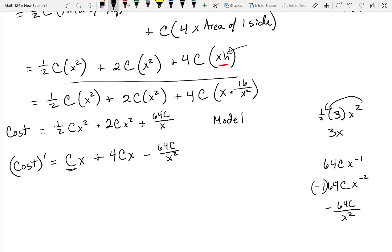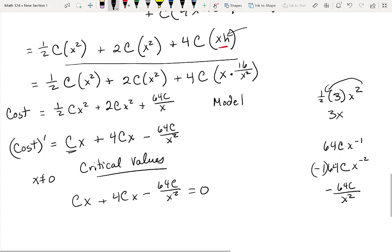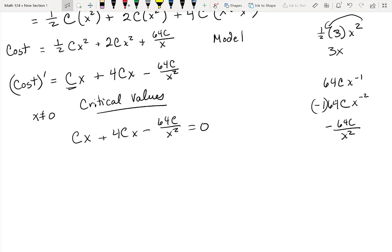So now we want to, one, cost is undefined at x equals 0. So x cannot be equal to 0. And then I'm going to find critical values. So I'm going to set this equal to 0. And you'll see here, c cannot be 0, right? C is not 0. That's the cost for the materials. So I can just divide through here by c and make my life simpler.